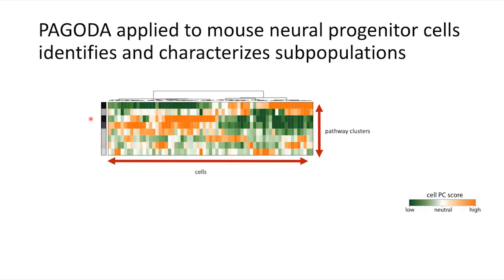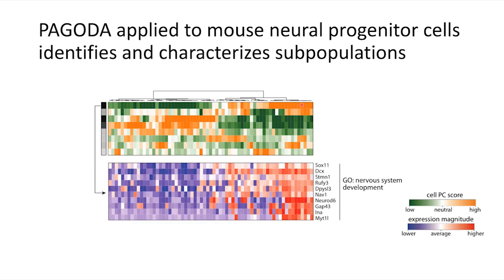To demonstrate the utility of PAGODA, we applied it to single-cell RNA sequencing data of mouse neuroprogenitor cells. Here, each column is a cell, the cells have been organized via hierarchical clustering, and each row is a set of over-dispersed pathways represented as pathway clusters identified through our analysis. Generally, we can see two major groups of cells marked by upregulation of genes and pathways in different pathway clusters. Looking into each pathway cluster based on pathway names and known gene functions, we can begin interpreting these different aspects of transcriptional heterogeneity. Applying this approach, we can interpret one aspect as being related to nervous system development.